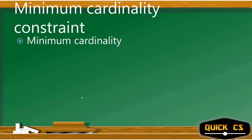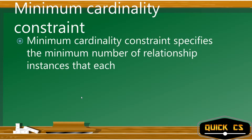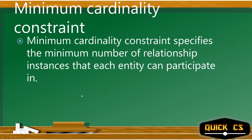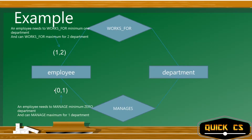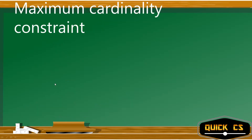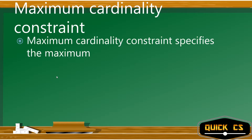The minimum cardinality constraint specifies the minimum number of relationship instances each entity can participate in. For example, with '0,1' an employee needs to manage a minimum of zero departments, whereas with '1,2' an employee must work for at least one department. So minimum cardinality tells you the least number of relationships an entity must participate in.